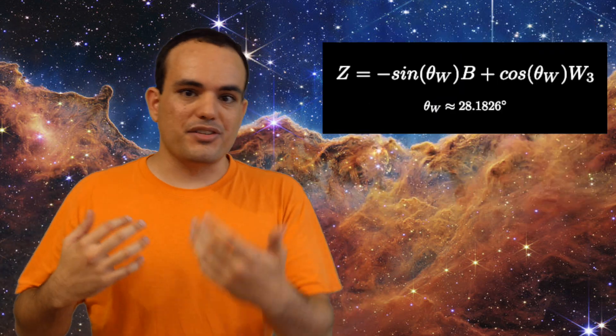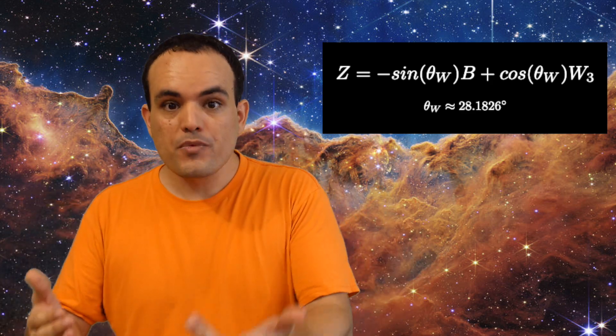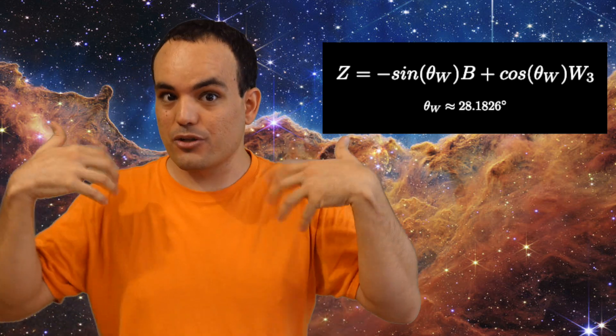This also means that the Z boson should be able to interact with particles in a very similar way as the photon. This normally doesn't happen because the Z boson has a lot of mass, and so creating it requires a lot of energy. But we've been able to force these situations into existence in collision experiments. And we've been able to prove that this is true.